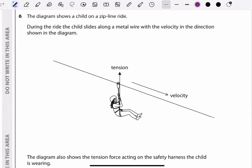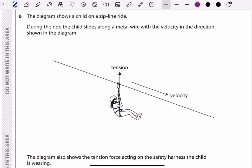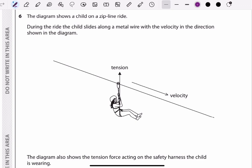Hi everyone, welcome back to our channel. Today we are going to explore the physics of a zipline, look at vector quantities, and identify forces acting on a child during the ride. Here we have a diagram showing a child in a zipline. The child slides along the metal wire with a certain velocity.